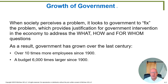This has caused a great deal of growth in the government. Since 1900, we've seen the government grow 10 times in the number of employees it has had, and the budget has grown 6,000 times since 1900. All of this has happened in a democratic society, so people are voting for the government to do more and more.